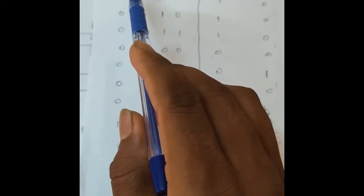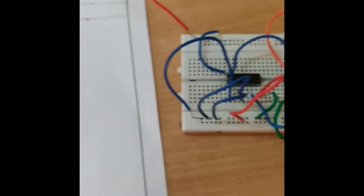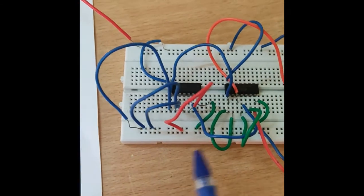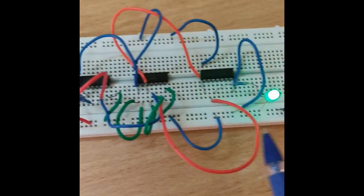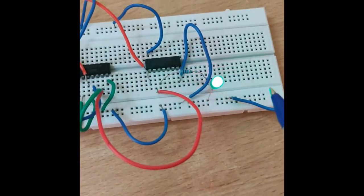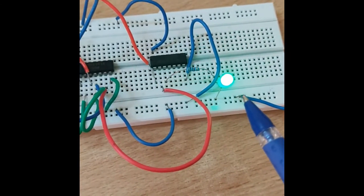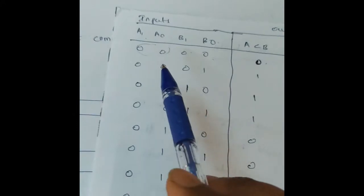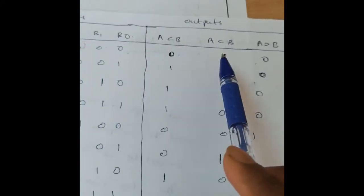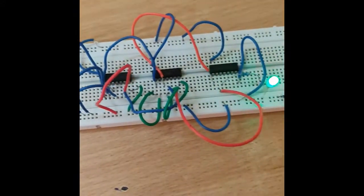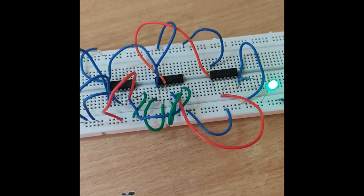For the first combination, all inputs are zeros. In our circuit diagram, all the inputs are connected to GND. So the output is ON — that is, the LED is ON. For all zeros input, the output is 1, verified using the LED.